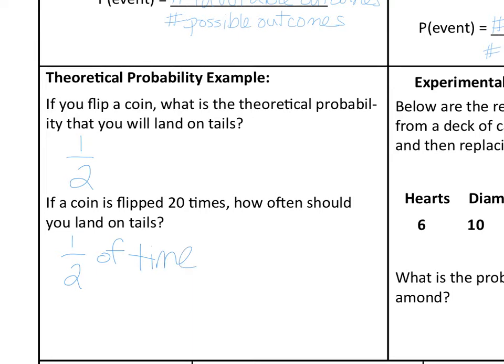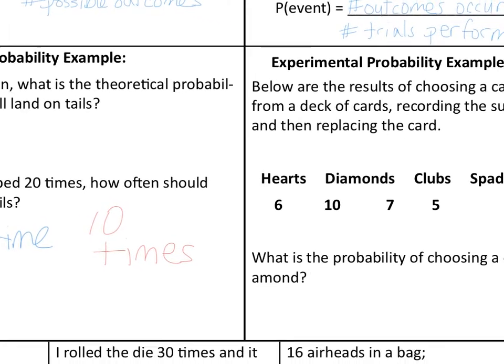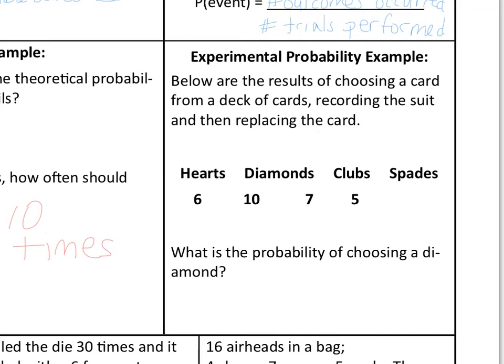The answer would be 10 times, because we expect it to land half of the time. But we know that what we expect to happen isn't always going to be what happens. Below are the results of choosing a card from a deck of five cards, recording the suit, and then replacing the card back — meaning I picked a card, saw what suit it was, and put it back.